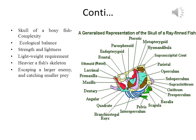The skull of a bony fish is a puzzle of extreme complexity, with many moving parts. In this collection of small interlocked bones, the fish strikes an ecological balance between strength and lightness. The lightweight requirement is real because bone, being denser than water, requires muscle to move. The heavier a fish skeleton is, the more slowly it moves.